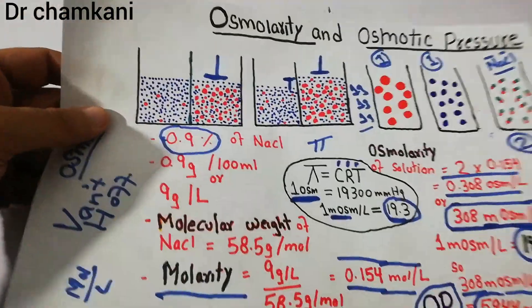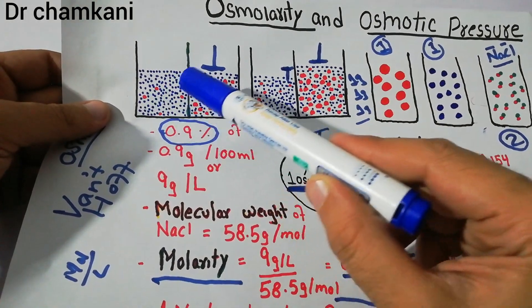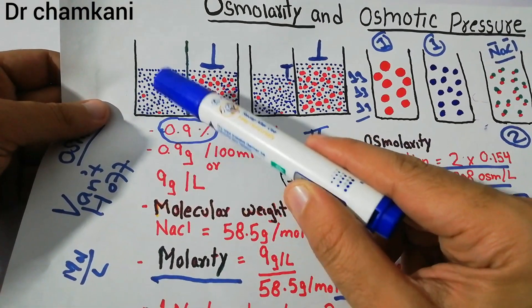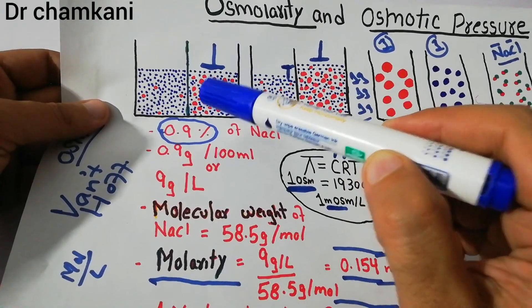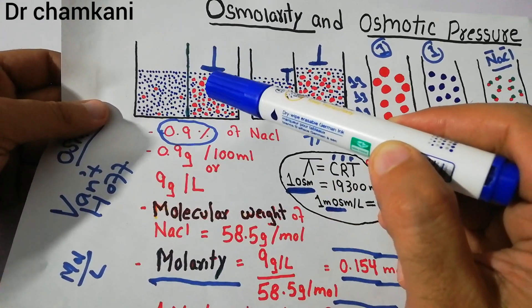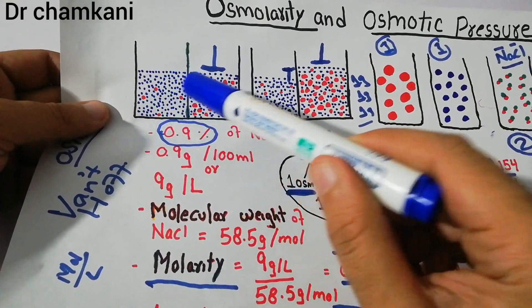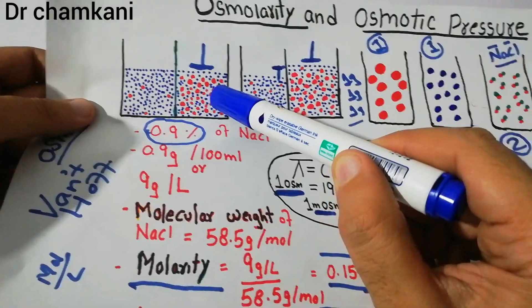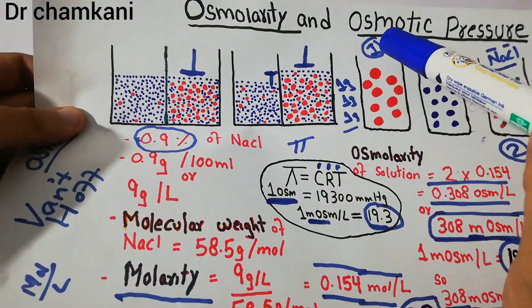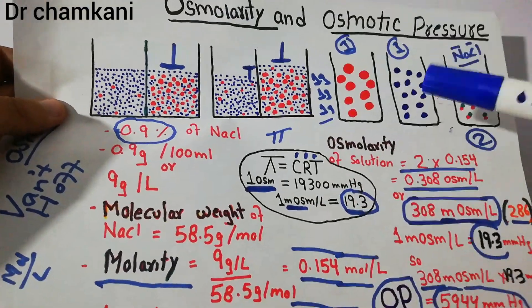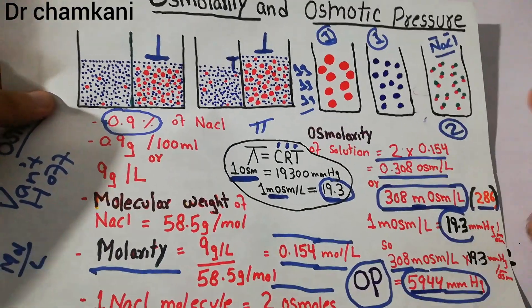We discussed osmolarity and osmotic pressure. If water is moving from a region with high concentration of water to a region with low concentration of water, a force is needed to stop that movement. The pressure needed to stop the movement of water from the high concentration side to the low concentration side is osmotic pressure. Osmolarity is basically dependent upon the number of osmotically active particles in any substance.